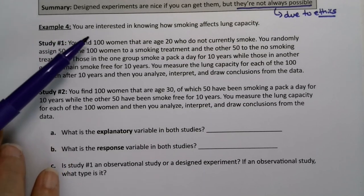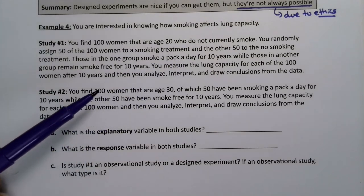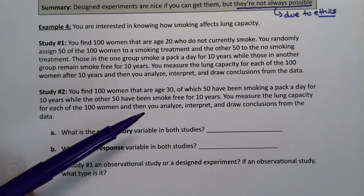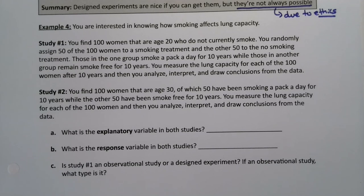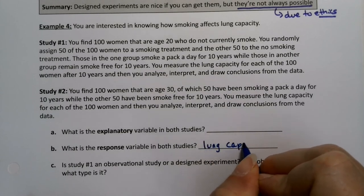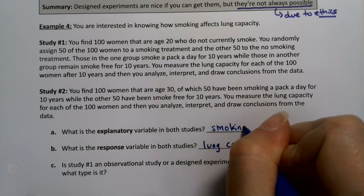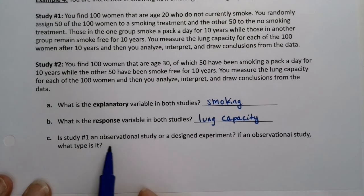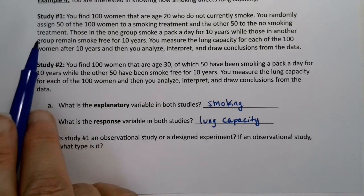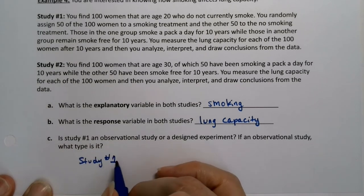Study one starts participants at age 20, forces them to smoke or not smoke, and measures them after 10 years. The response variable is rather obviously lung capacity, because lung capacity is the outcome. The predictor is smoking. Study number one is a designed experiment because the researchers randomly assigned smoking.